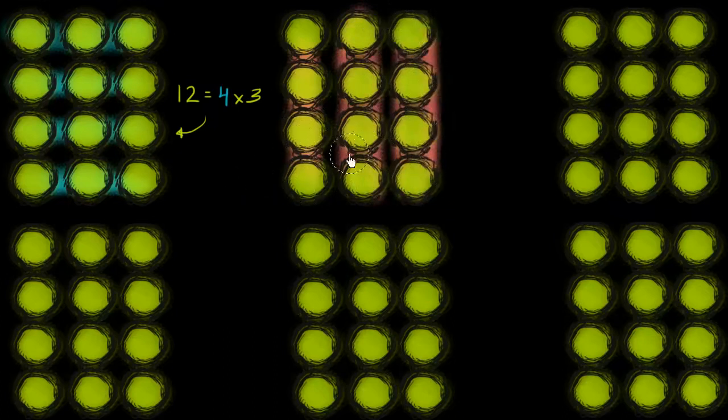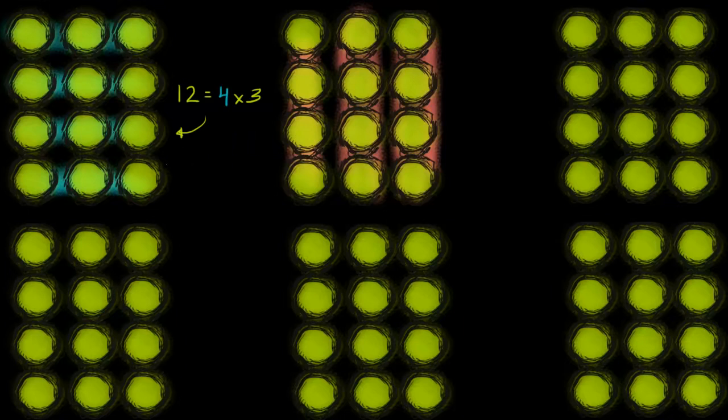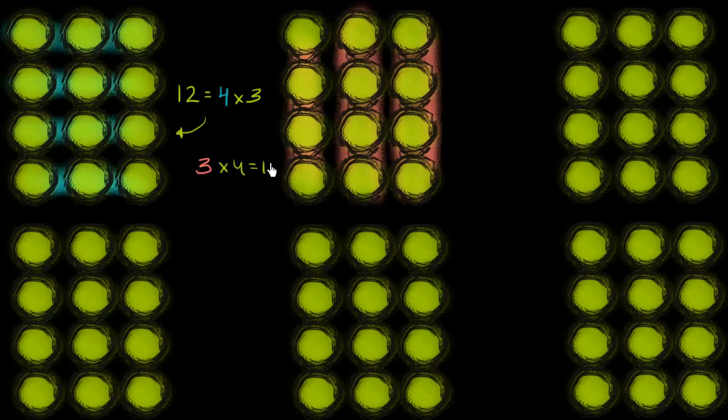So now we could view 12 as being 3 groups of 4, or we could say that 3 times 4 is equal to 12. So whether we're doing 4 times 3 or 3 times 4, they're both going to be equal to 12. Four groups of 3 is 12, 3 groups of 4. But we don't have to stop there.